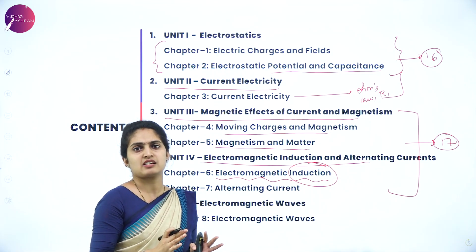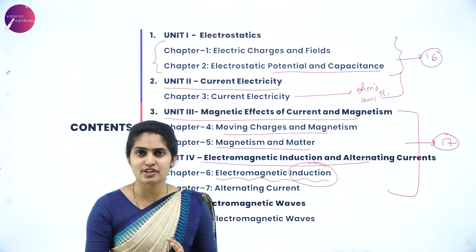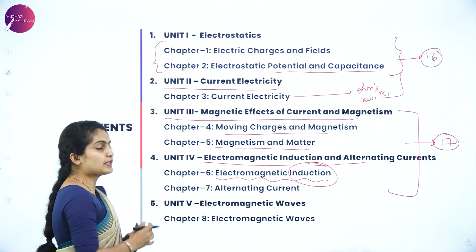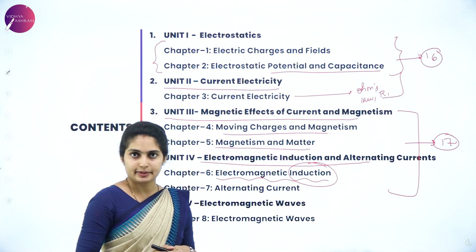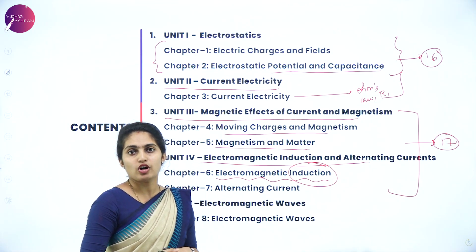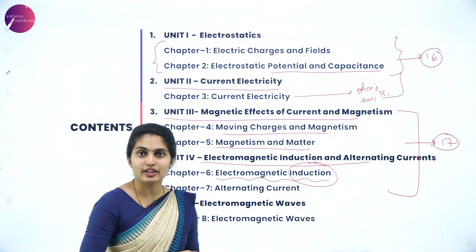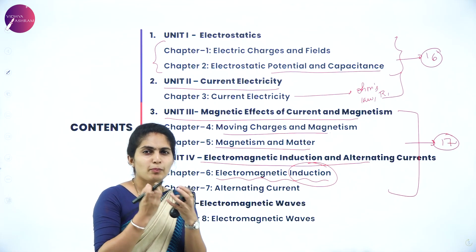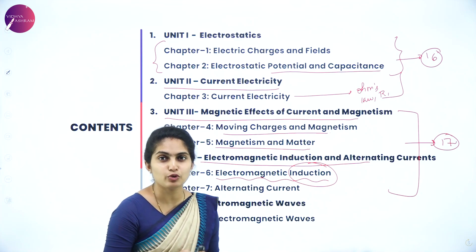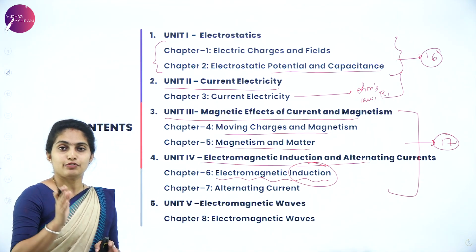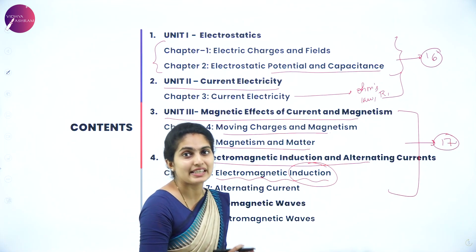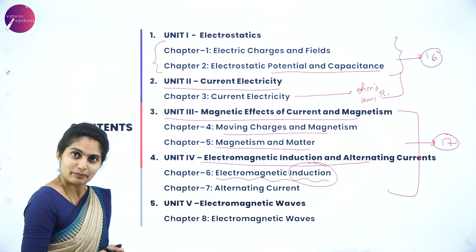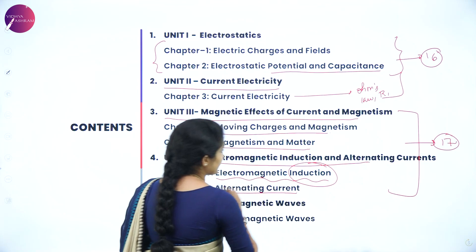Class 12 is the easiest class — if you concentrate, you can easily get through it. Chapter 7 is Alternating Current, where we study AC supply of voltage and how it behaves exactly. Though it seems complicated, it is a very beautiful and easy chapter. If you study it, it becomes very easy.